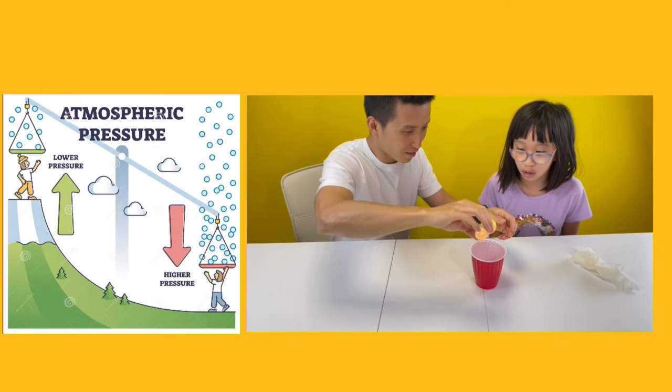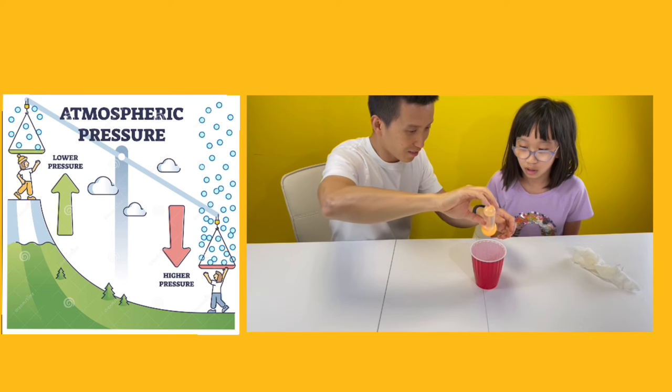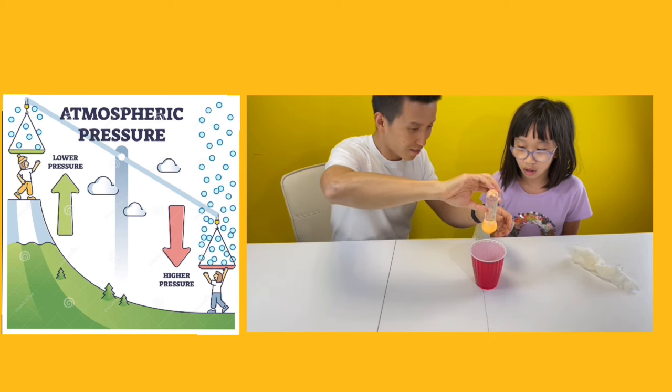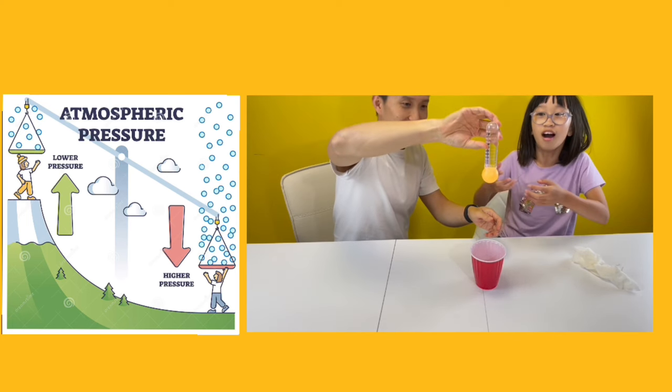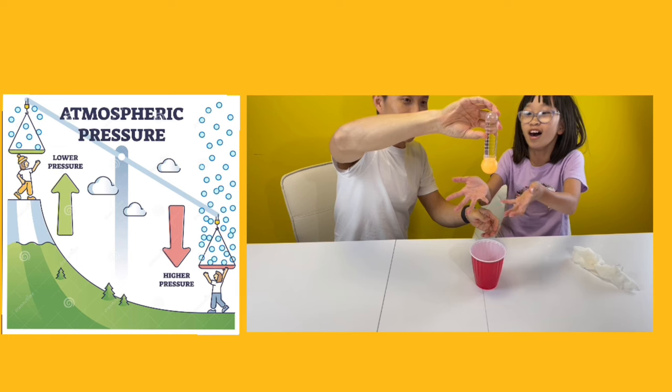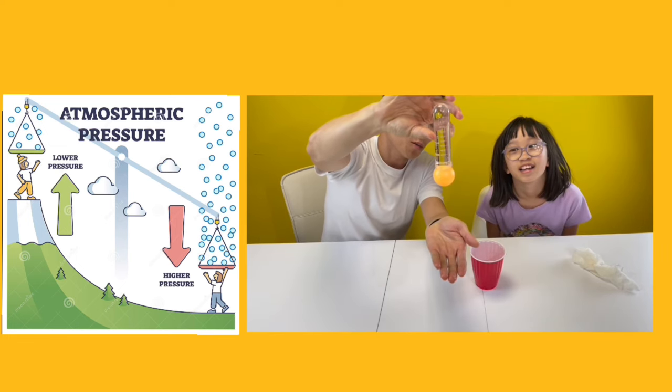Back to the table tennis ball. The reason why it could happen was: one, we fill the bottle with water; and two, because of water, the pressure outside is actually higher than the pressure inside. So the table tennis ball is being pressed against the bottle mouth by the air pressure.